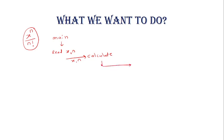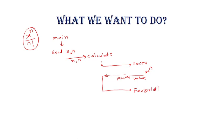Inside calculate, we want to call one function 'power', which will calculate x raised to n. And we want that x raised to n value back to the calculate function. Then through this calculate function, I want to call one more function, that is 'factorial', which is used to calculate n factorial. And this n factorial, I want to give back to the calculate function, where I will calculate x raised to n divided by n factorial.